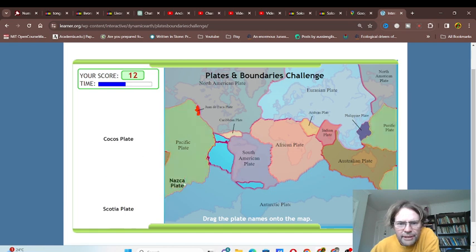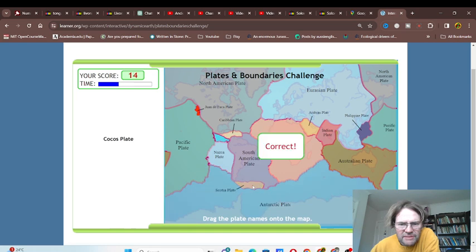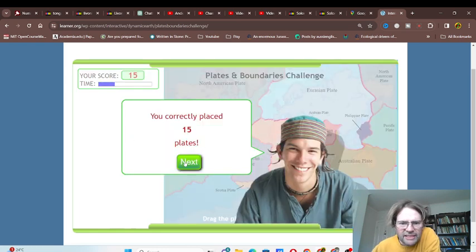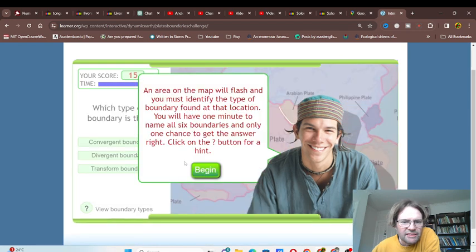Nazca is off Peru, so it's probably that one. Scotia, Scotia. Oh yeah, so that's the Sandwich Islands or whatever. Cocos plate has to be this one. Obviously, yeah. Map area of flash, and identify the type of boundaries, the locations.